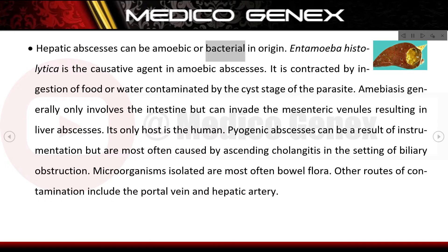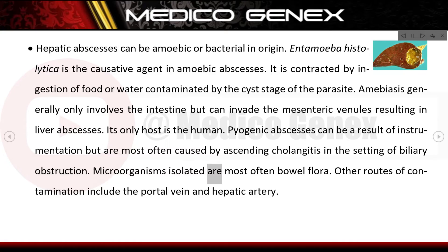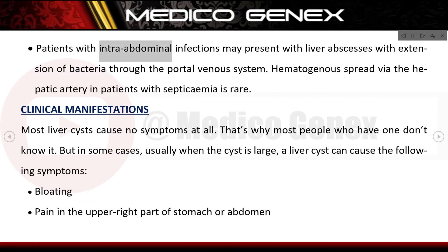Hepatic abscesses: hepatic abscesses can be amoebic or bacterial in origin. Entamoeba histolytica is the causative agent in amoebic abscesses, contracted by ingestion of food or water contaminated by the cyst stage of the parasite. Amoebiasis generally only involves the intestine but can invade mesentery venules, resulting in liver abscesses; its only host is the human. Pyogenic abscesses can result from instrumentation but are most often caused by ascending cholangitis in the setting of biliary obstruction. Microorganisms isolated are most often bowel flora. Other routes include the portal vein and hepatic artery; hematogenous spread via the hepatic artery in patients with septicemia is rare.